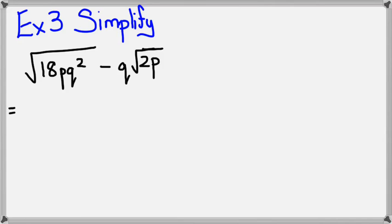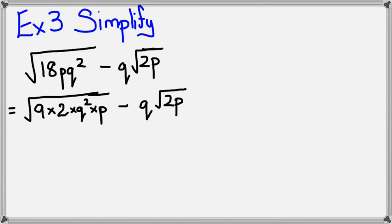Getting a little bit more complicated, we have square root of 18pq squared minus q square root of 2p. The first thing we want to do is split up the 18, so we're going to split that up into 9 times 2. We know that q squared can be square rooted, so we're going to leave it as q squared p, and leave q square root of 2p as it is.